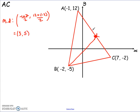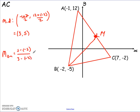Now to get the median from B to that midpoint — let's call it M — I need the gradient of BM, then use that in the equation. Gradient of BM uses the same formula: y2 minus y1 over x2 minus x1. So it's 5 take away negative 5, over 3 take away negative 2. Minus minus becomes a plus, so that's 10 over 5, giving a gradient of 2.